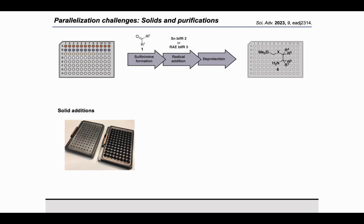You also need to remove solids, since you don't want to carry over cesium carbonate base into subsequent steps. To remove solids, we use spin filtration: a filter plate holds the suspension, a receiving plate is placed below, and after centrifugation the solution passes through the filter into the receiving plate. We also use this solid addition and removal system for purifications. SCX-2 cation exchange sorbent works well: at acidic pH the SLAB reagents, being amines, bind to the sorbent while non-cationic species are washed away. Adding base releases the SLAB reagents, which are collected and the base removed by evaporation to give pure SLAB reagents.